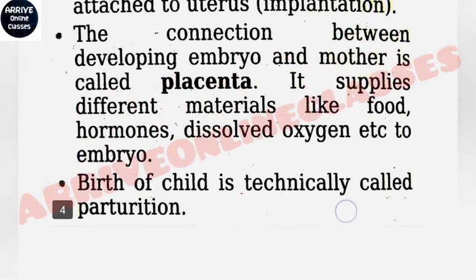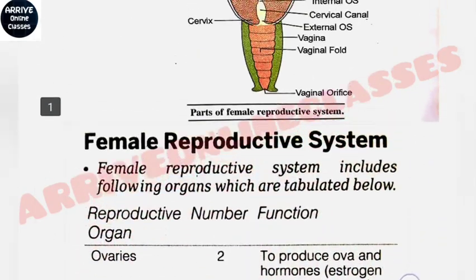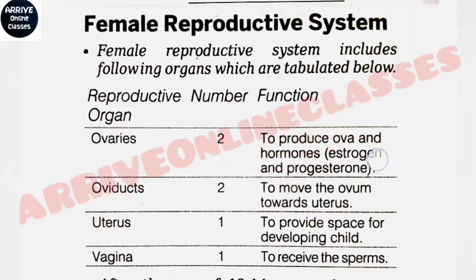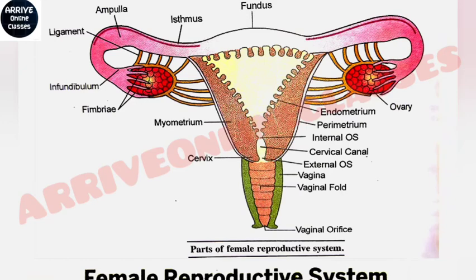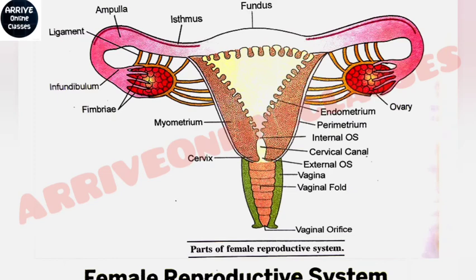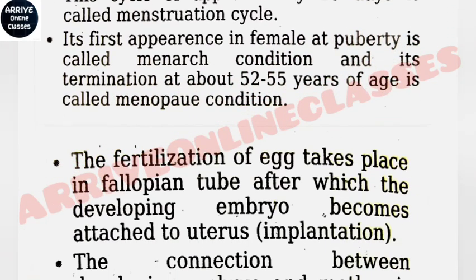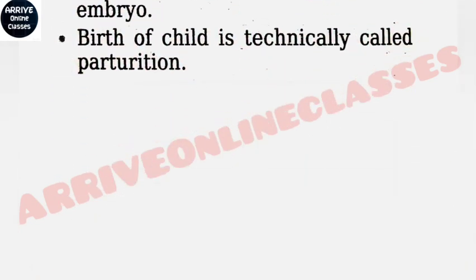To recap: the primary sex organ in female is the ovary. The fimbriae of the fallopian tube help attach it to the ovary. The three main parts of the fallopian tube are infundibulum, ampulla, and isthmus. Fertilization occurs in the ampulla. The embryo is fixed in the endometrium wall of the uterus. The ovary produces estrogen and progesterone. The corpus luteum produces progesterone. The first menstrual flow is menarche and the last is menopause. Thank you for watching.